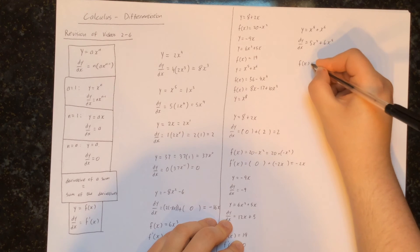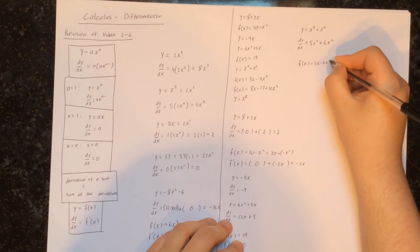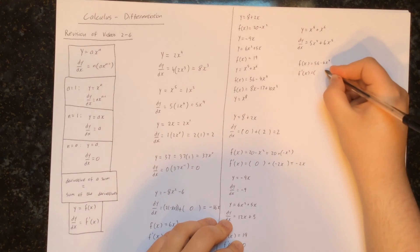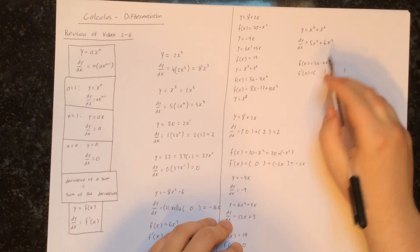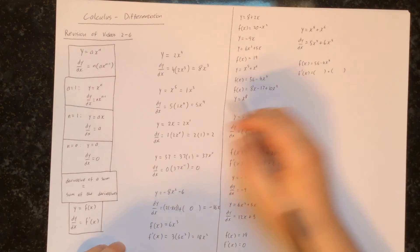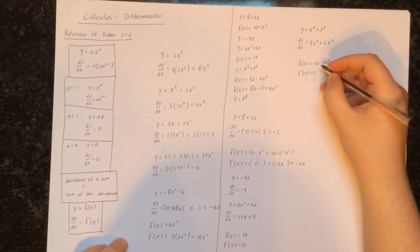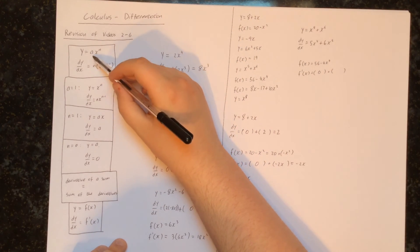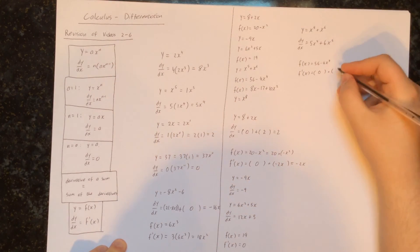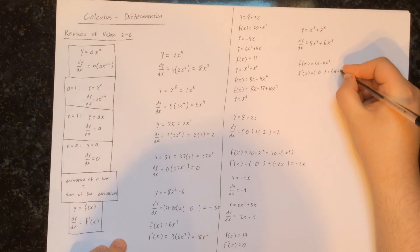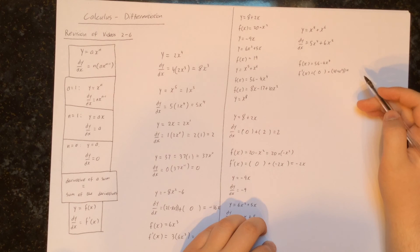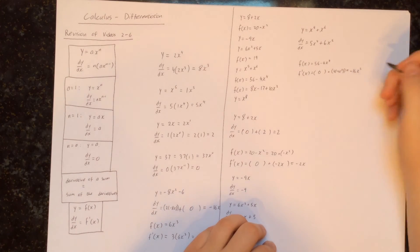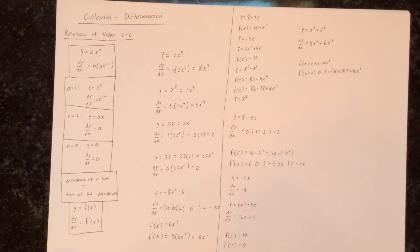Next, f of x equals 56 minus 4 times x to the power of 4. We find the derivative of each part and add them. The derivative of 56 is 0. For minus 4x to the power of 4, we multiply by the power 4 and reduce the power by 1 down to 3: 4 times minus 4 is minus 16, giving minus 16x cubed. So the derivative is minus 16x cubed.